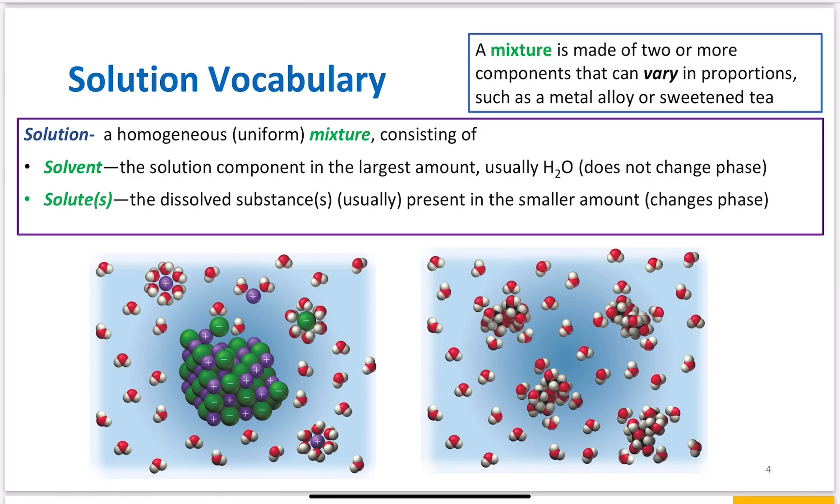And my solute is the opposite. It's the dissolved substance that's usually present in the smaller amount, and it's going to change phase if a phase needs to be changed. So we can see here a couple different examples. We've got sodium chloride here, and over here you've got, I think it's sucrose, but it's a non-electrolyte which we'll talk about later in this chapter.